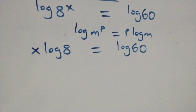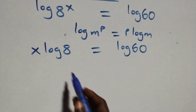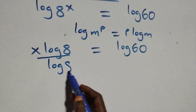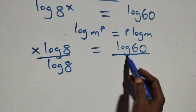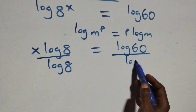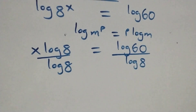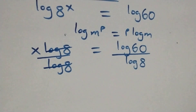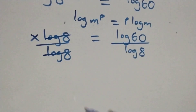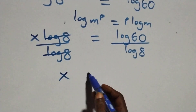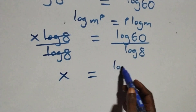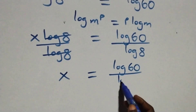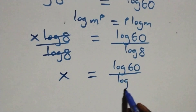The next step here, we divide both sides by log 8. We divide this side by log 8, also divide the other side by log 8. Which implies log 8 cancels each other, and we have x equals to log 60 over log 8.